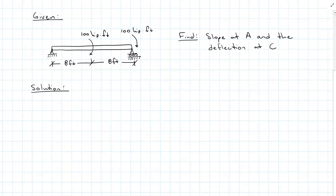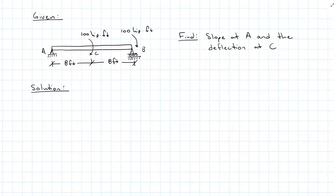Here is our simply supported beam with two moments applied where we want to find the slope at A and the deflection at C. Using Castigliano's method, the first thing we are going to do is apply our load. If we are looking for the slope at A, then I am going to apply the slope moment load P at A.